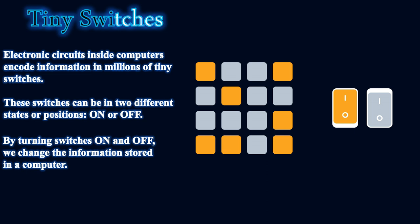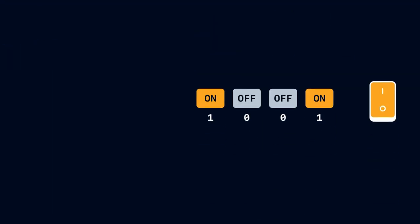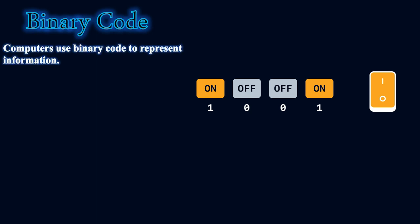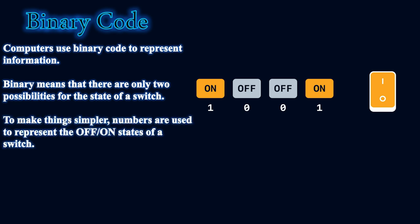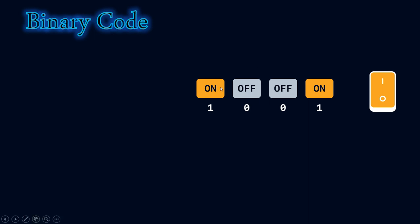Computers use binary code to represent information. Binary means there are only two possibilities for the state of a switch. To make things simpler, numbers are used to represent the off or on state: if the switch is on, the number is 1; if the switch is off, the number is 0.